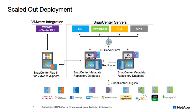Shown here is a scaled-out deployment with redundant SnapCenter servers acting as backup for each other, with a repository for each on protected NetApp storage. Setting up this high availability environment requires additional preparation steps prior to the SnapCenter server installation itself. These steps are described in the SnapCenter installation and setup guide. A link to this guide may be found on the resources slide later in this video.